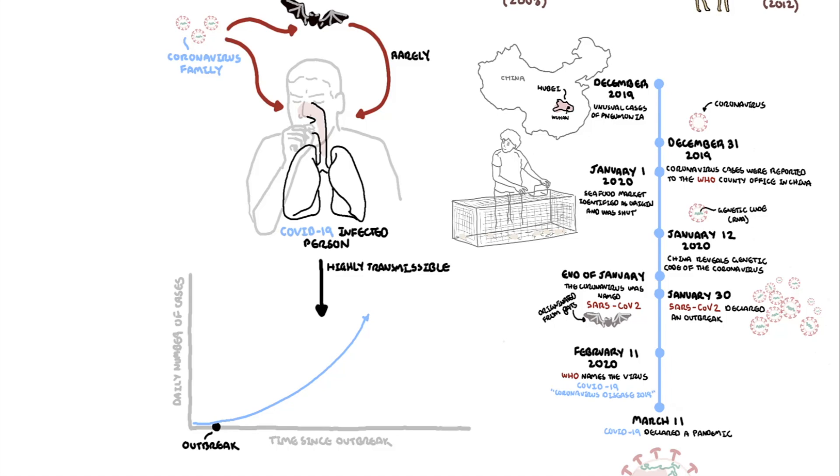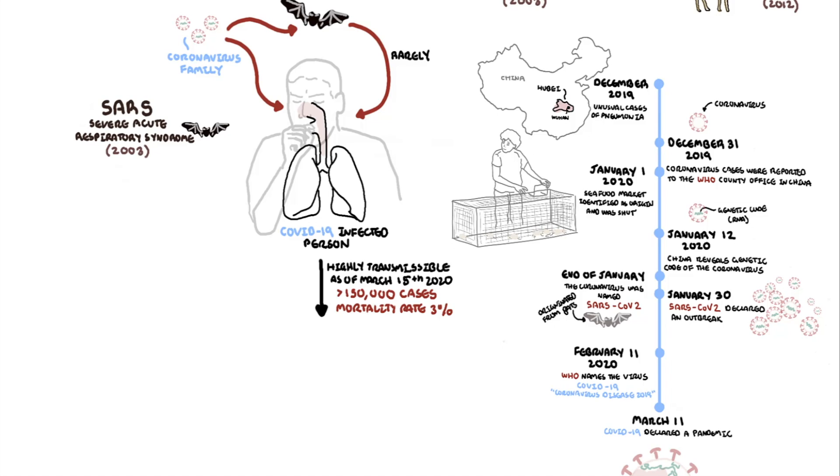As of March 15th, COVID-19 has affected more than 150,000 people worldwide and carries a mortality rate of around 3%. To put it into perspective, if you compare these figures to the other coronavirus outbreaks, for example, SARS in 2003 had just over 8,000 cases with a mortality rate of about 9.5%. And MERS in 2012 had roughly 2,500 cases with a mortality rate of about 35%.